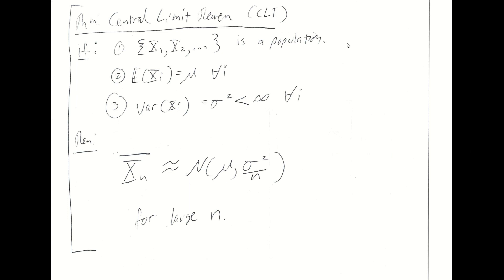The central limit theorem tells us: if you have a population with population mean mu and population variance sigma squared, which is finite, then the sample mean is approximately a normal random variable with mean mu and variance sigma squared over n. This holds for large n — as a general rule of thumb, n greater than 40 is a pretty safe bet. If you have at least 40 elements in your sample, this is a good approximation.